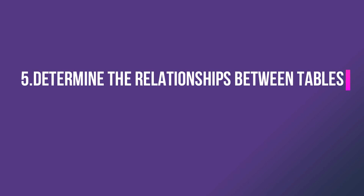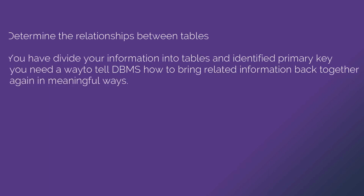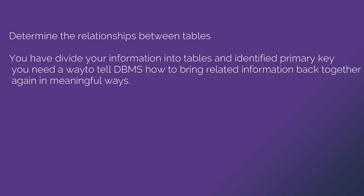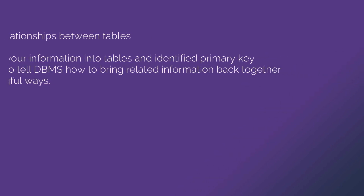The fifth step: define relationships between tables. I have a video about relationships between tables. The point is to connect two tables together using a common field — the data should be common between them. You can create a relationship using the primary key. After dividing information into tables and identifying primary key fields, you need a way to tell the DBMS how to bring related information back together in meaningful ways. Relationships are set on the basis of a common field across tables.